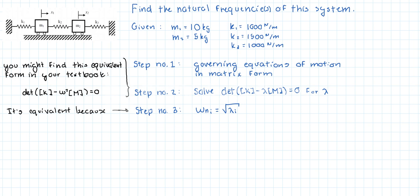We're given the following variables: the first mass is equal to 10 kilograms, the second mass is half of that, the stiffness coefficient for the first spring is a thousand newtons per meter, the second one is a thousand five hundred newtons per meter, and the third one is equal to the first one, so a thousand newtons per meter.